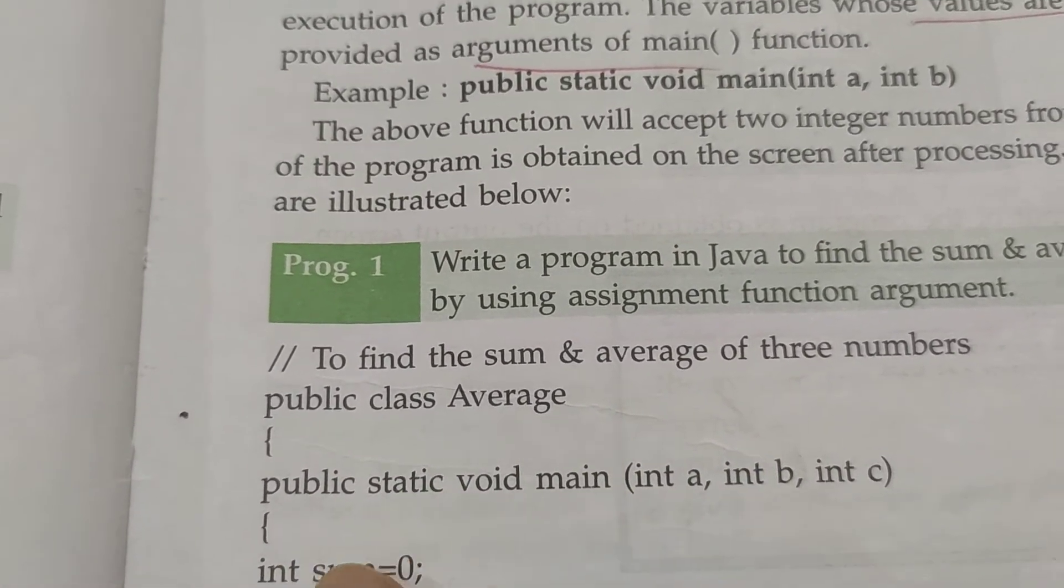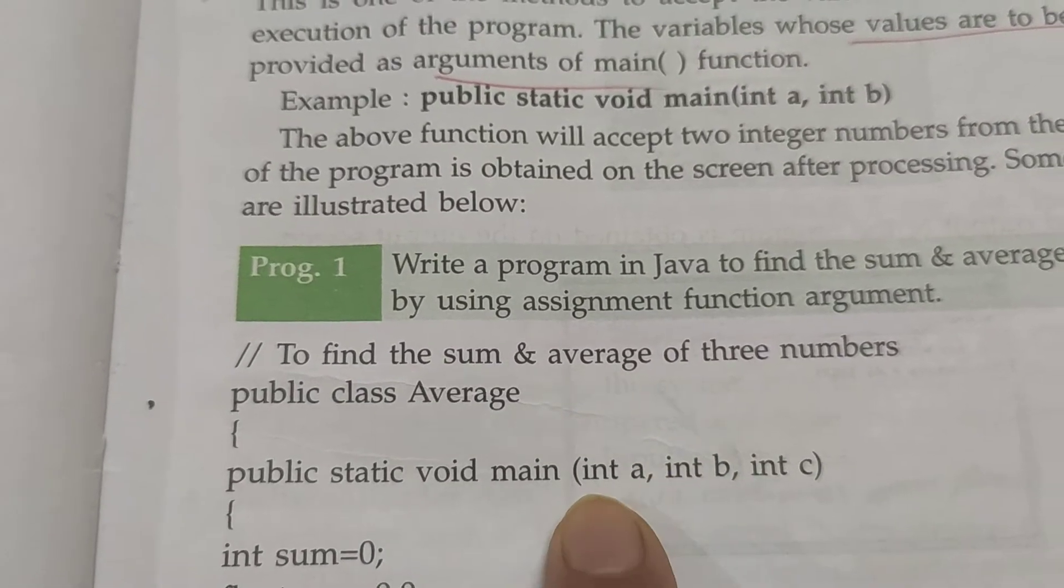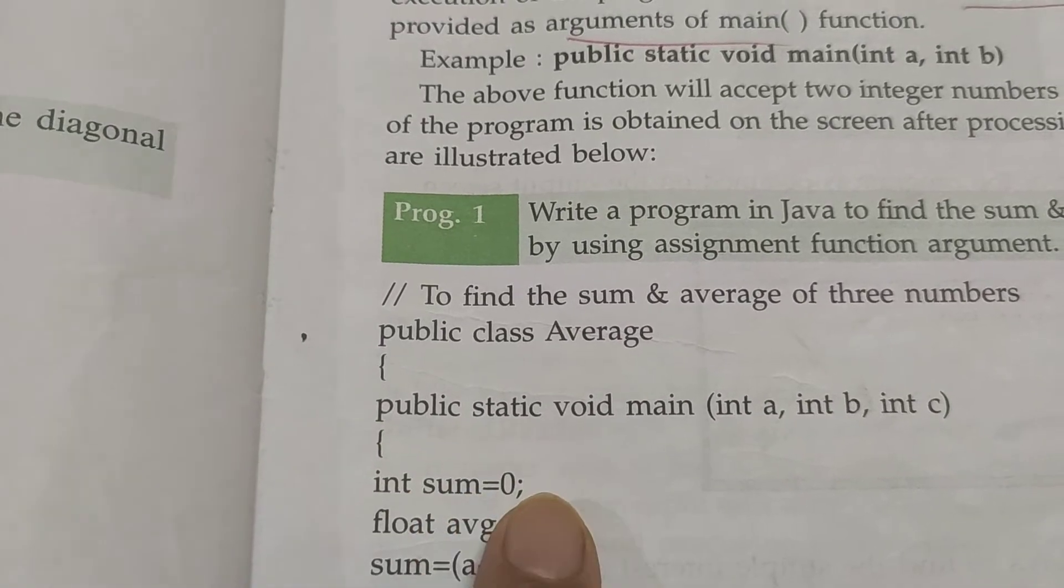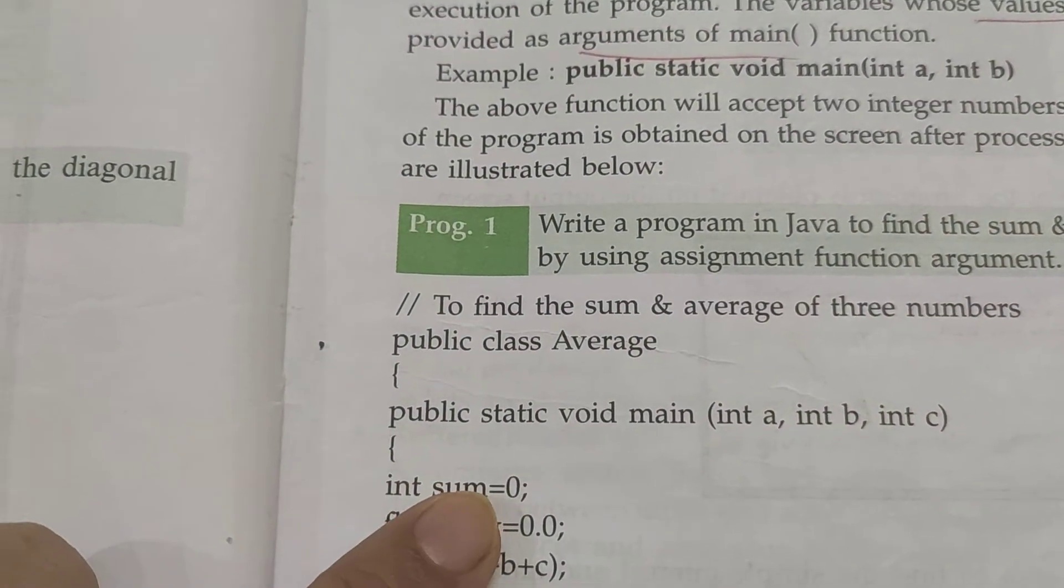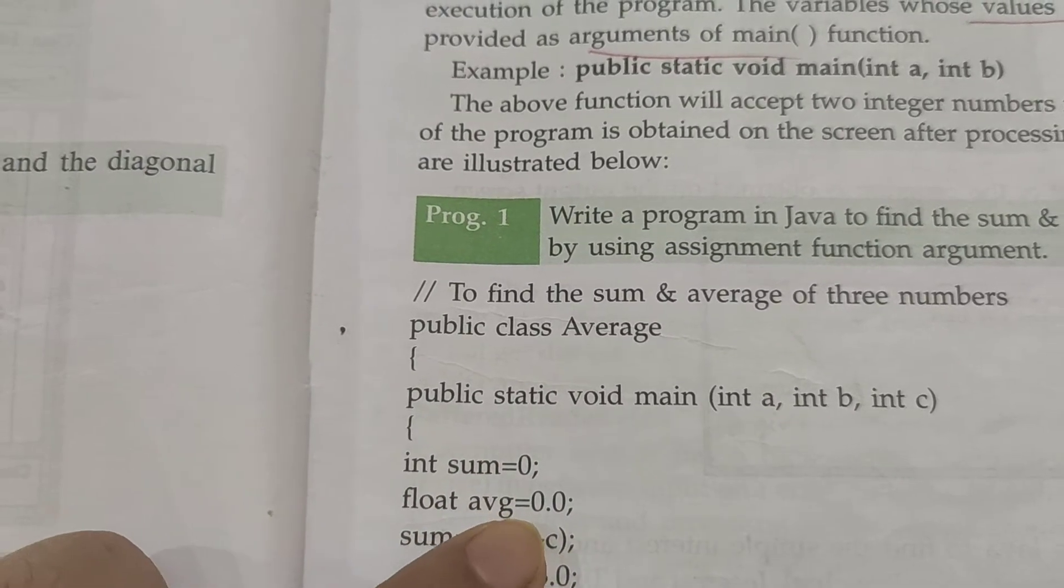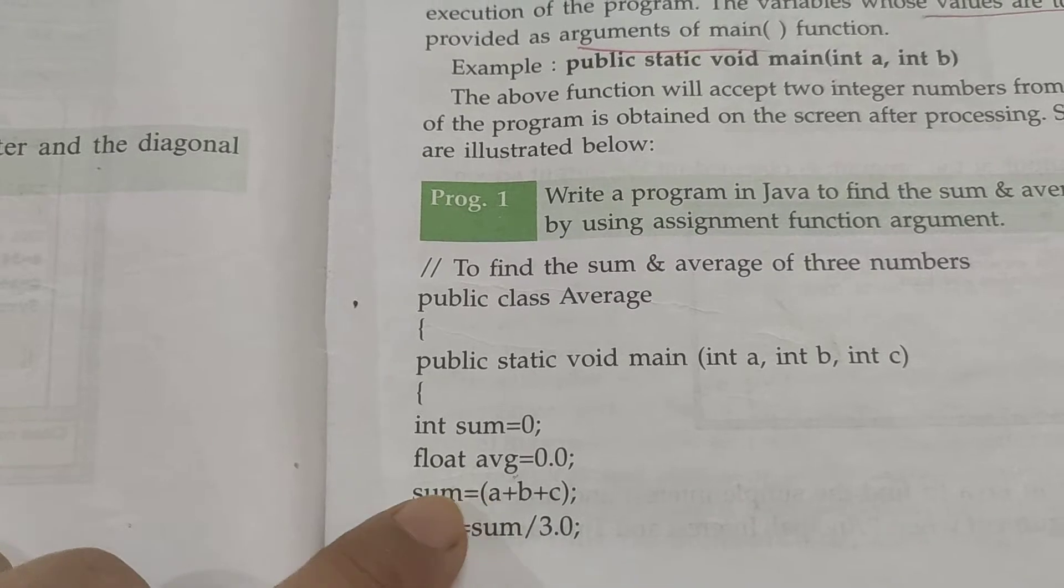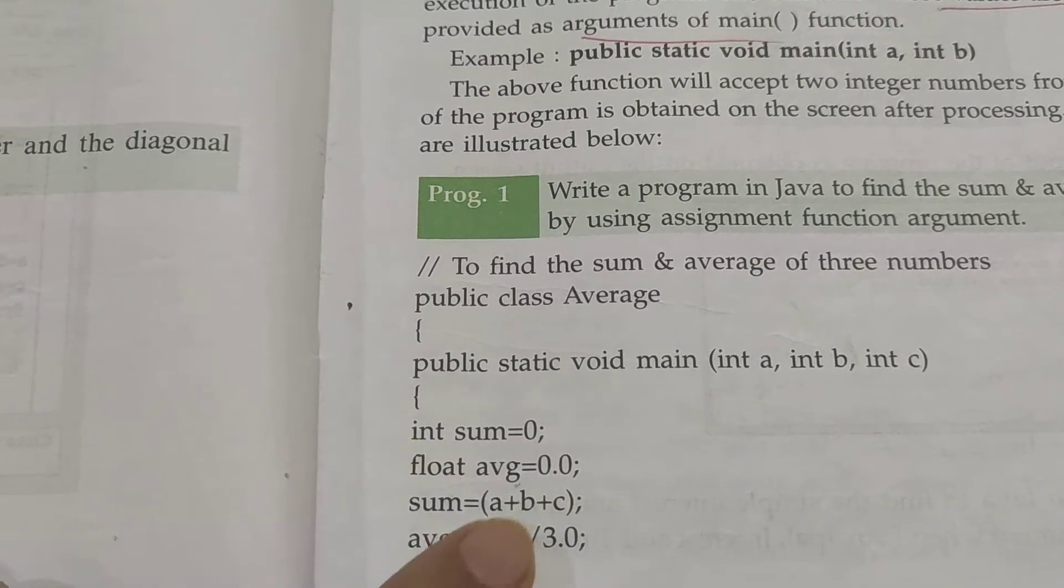Integer a is equal to 2, b is equal to this, c is equal to this, but we have not taken this function argument, so we can put this in the main class as a, b, c. Here we have sum equals to 0 and average equals to 0. Sum variable stores the sum of three numbers. The formula is sum equals to a plus b plus c, and average equals to sum divided by 3.